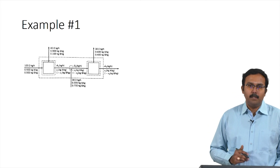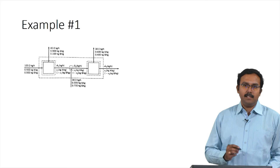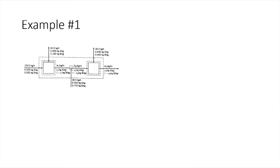Before solving, we identify the basis for the system. Since multiple flow rates are provided, we use the given flow rates as the basis. We start with the overall system because, looking at the different systems, the overall system has only one unknown stream — stream M3 — making it the best starting point.